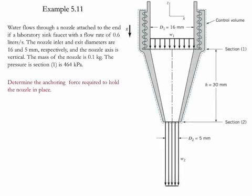Example 5.11. In this example we have water flowing through a nozzle attached at the end of a laboratory sink faucet with a flow rate of 0.6 liters per second. The nozzle inlet and exit diameters are given and the nozzle axis is considered to be vertical. The mass of the nozzle is given as well as the pressure at point 1. We need to determine the anchoring force required to hold this nozzle in place.